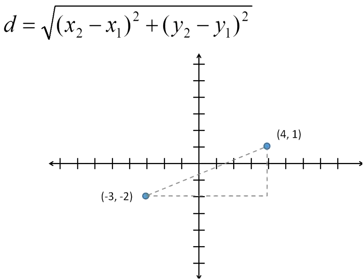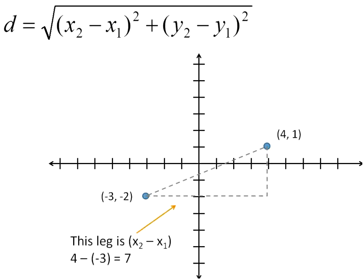Now what that equation really means is this. If you take the two points, it doesn't matter what given points they are, you can draw a line between them. Draw a horizontal and a vertical — you can see here horizontal and vertical — and those would create a right angle triangle. This leg from here to here, the x value, or the distance there horizontally, is x2 minus x1: 4 minus negative 3, equals 7. The distance from here to here is 7, and that's discovered using this part of the equation.